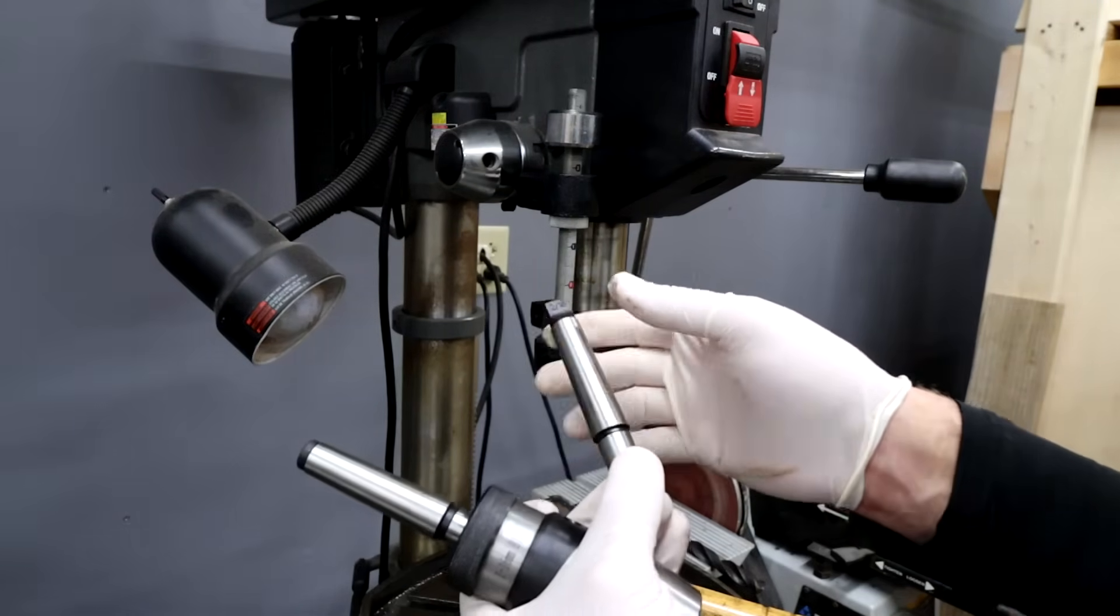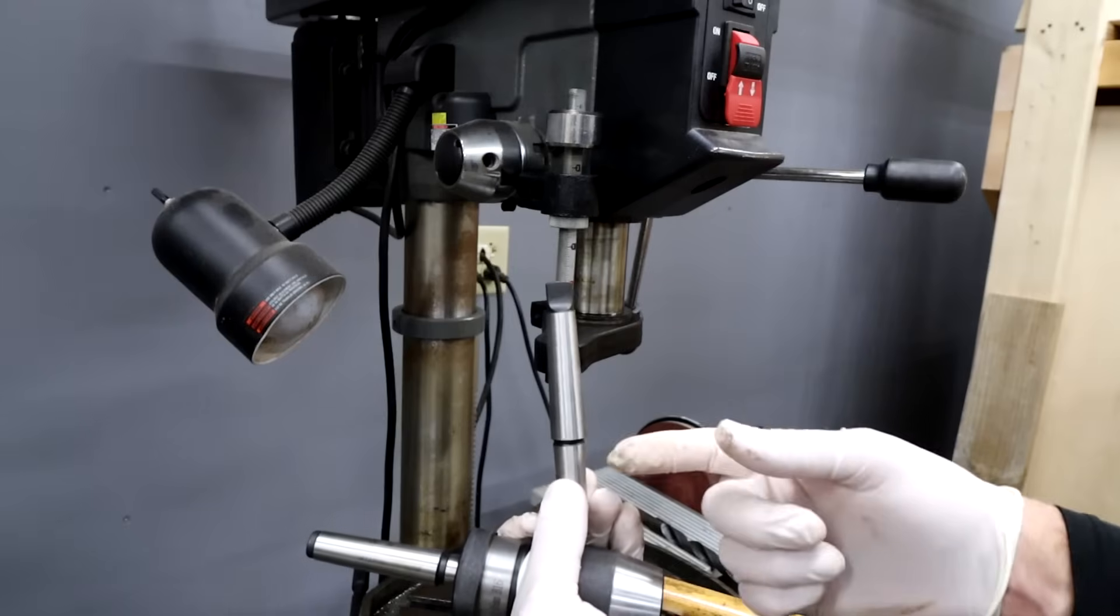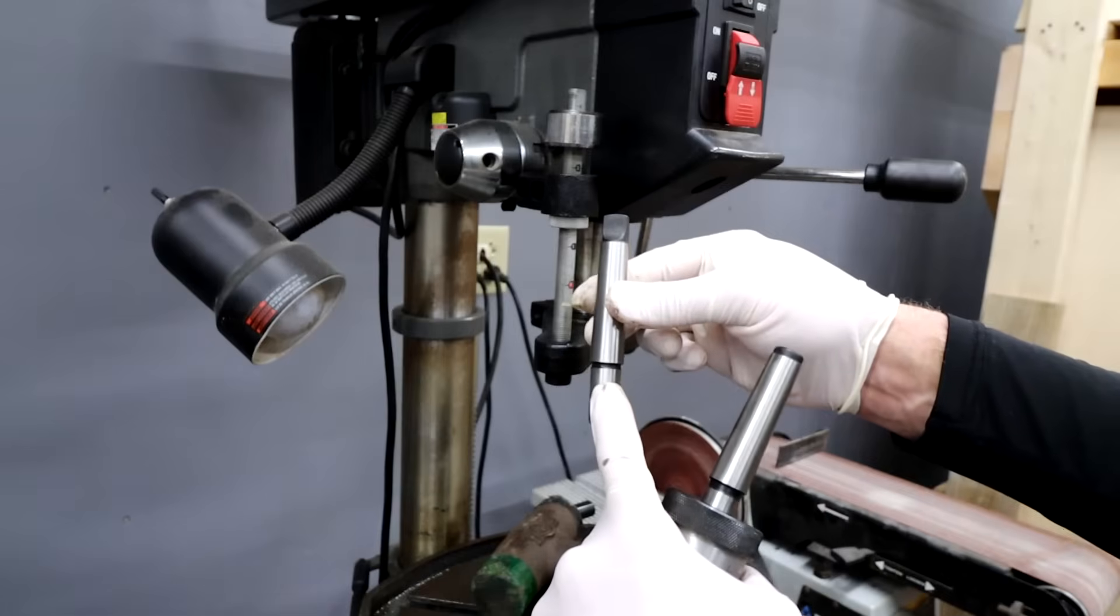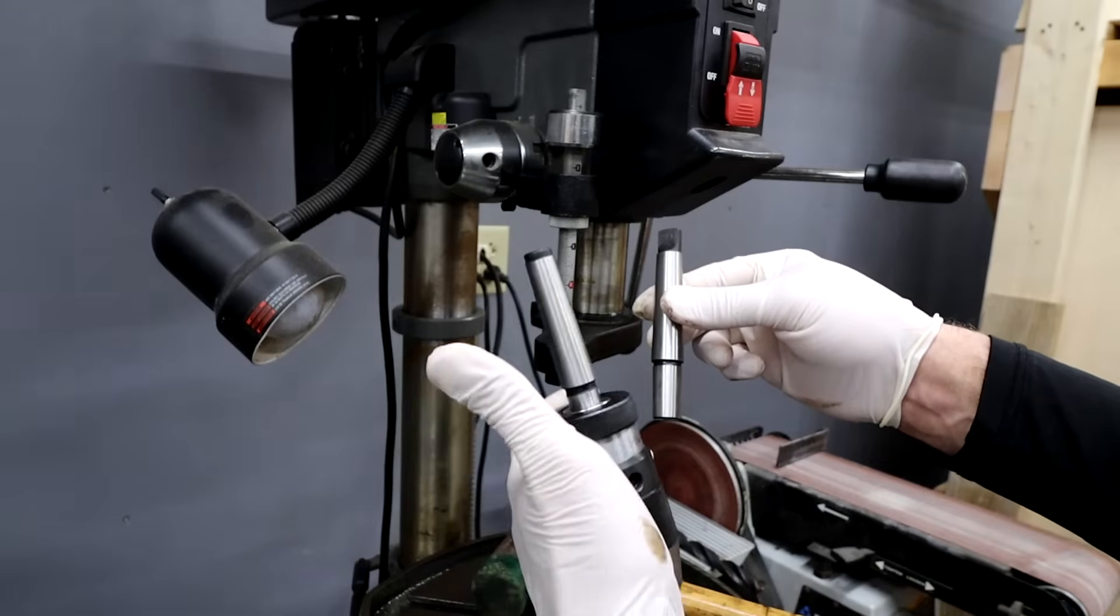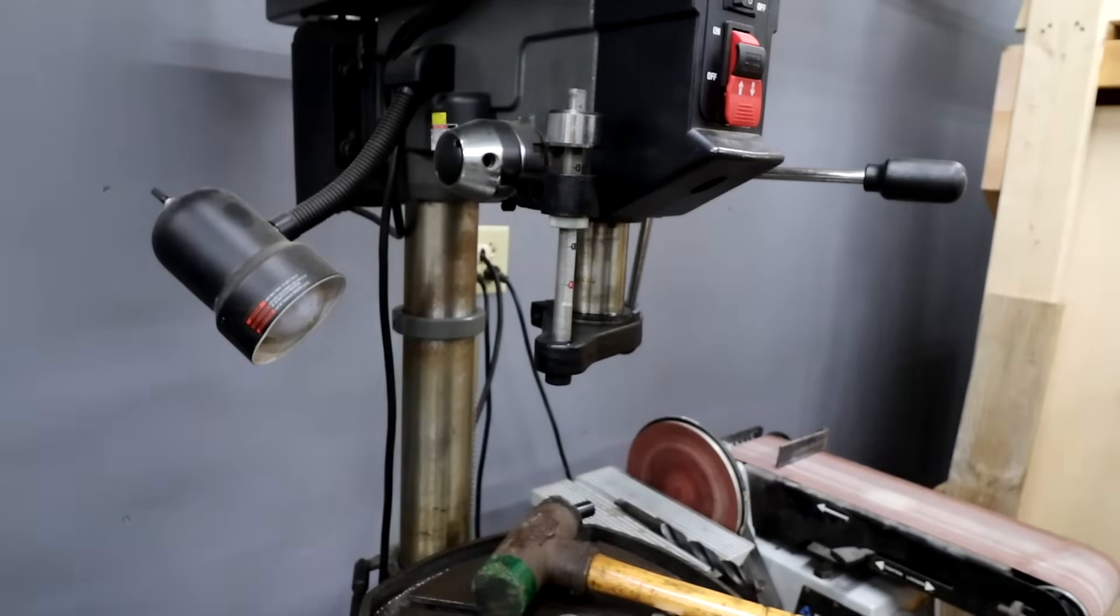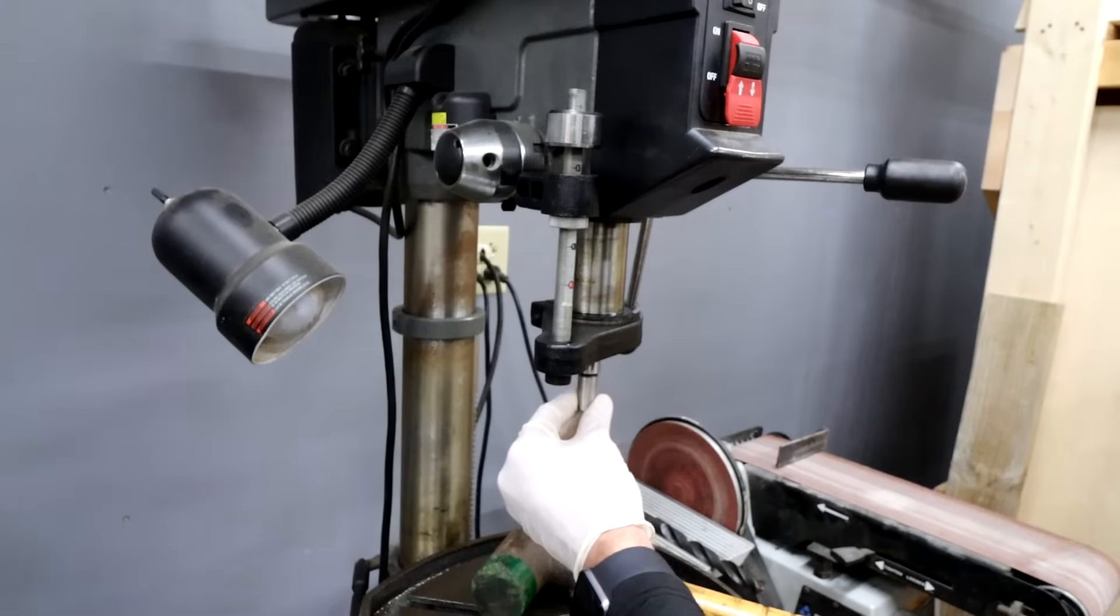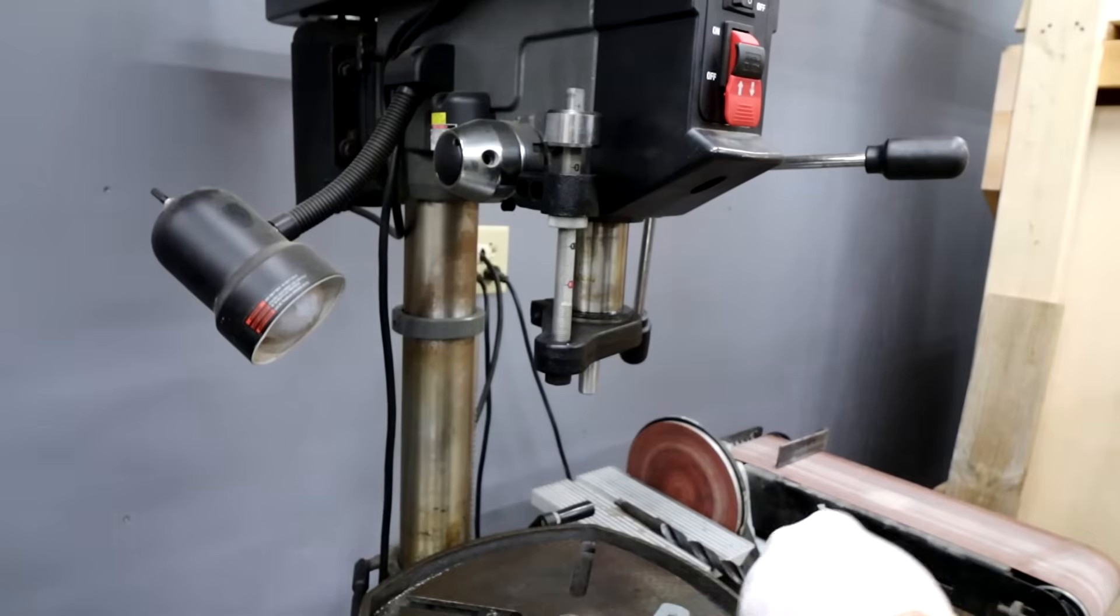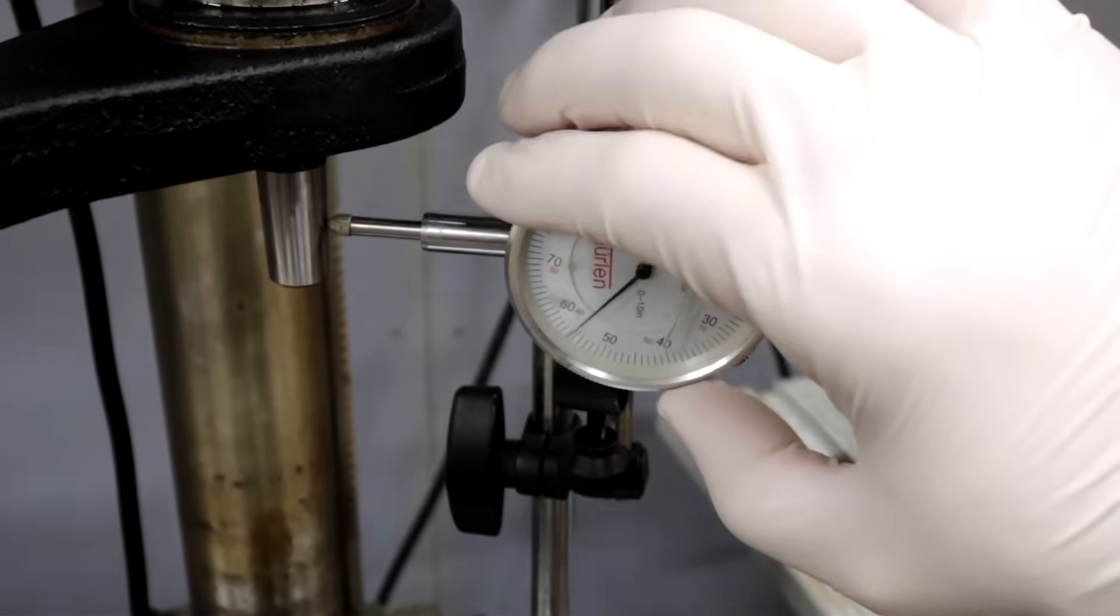So 2-16 just means Morse taper two to a B16 adapter. So what we're going to do first, let's install this, put the dial indicator on this adapter itself first. Then we'll go knock the Morse taper out of this, and then come and install it, put the drill bit in here and check it. This is super simple. You put it in, it won't go until you turn it and get it just in the right spot. Just give it a little tap. Now we have the adapter installed.